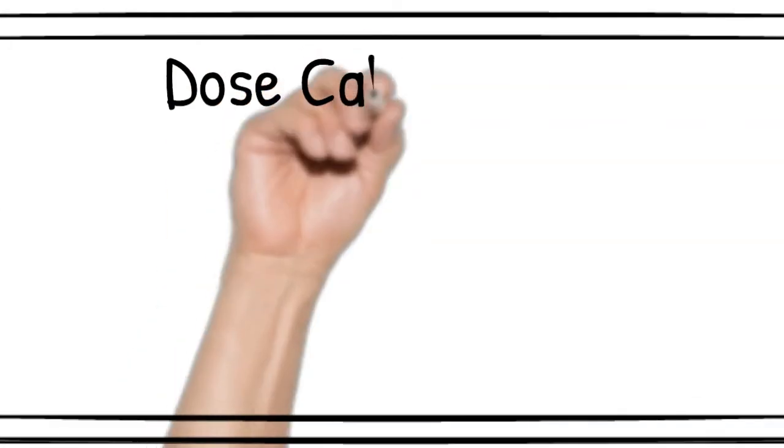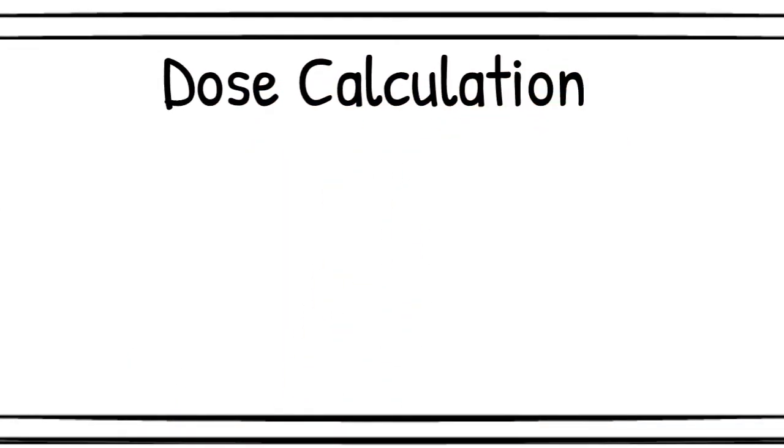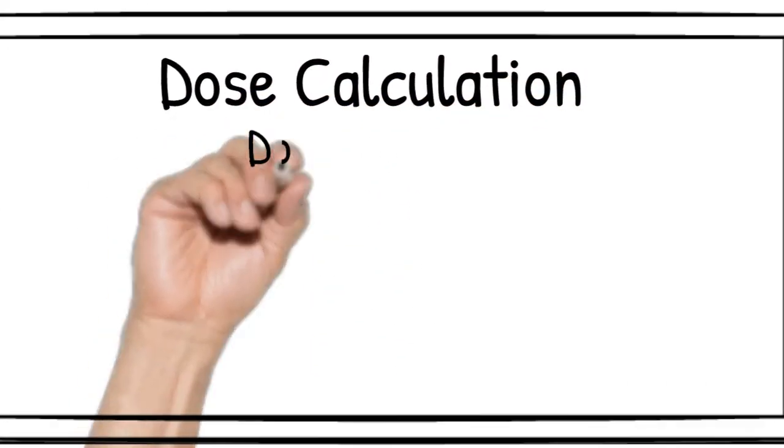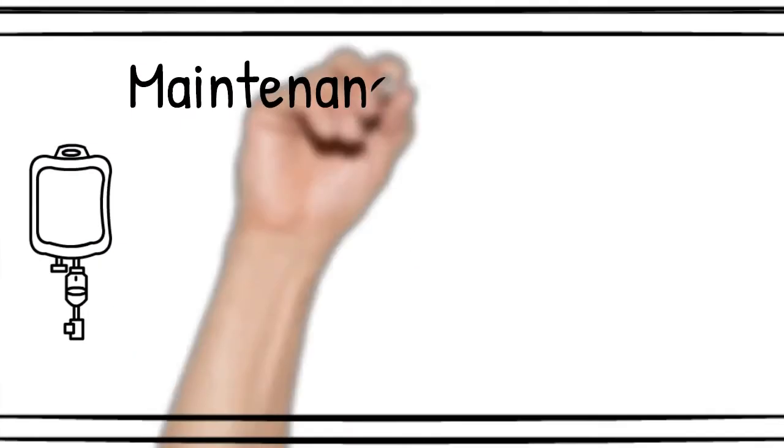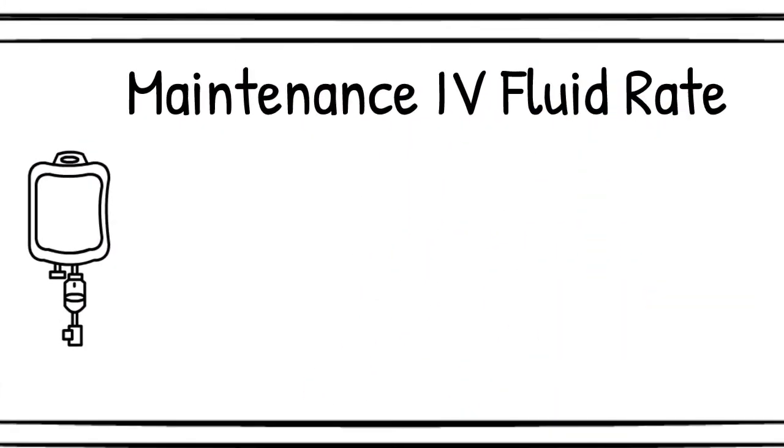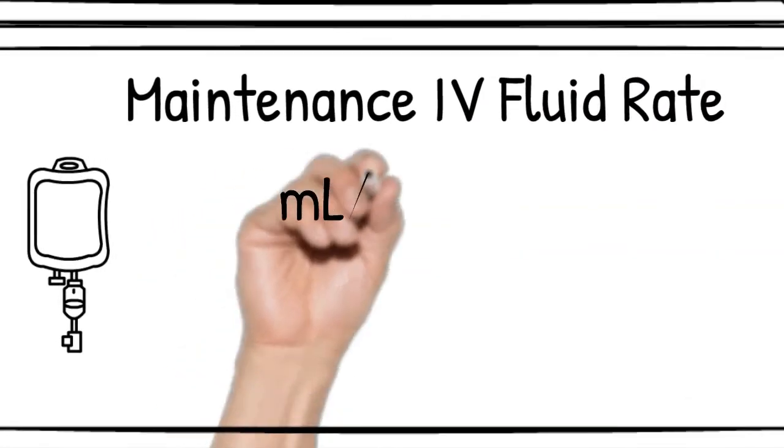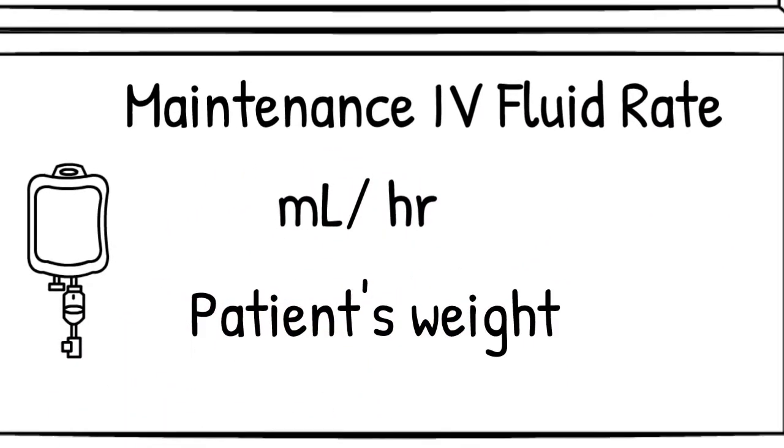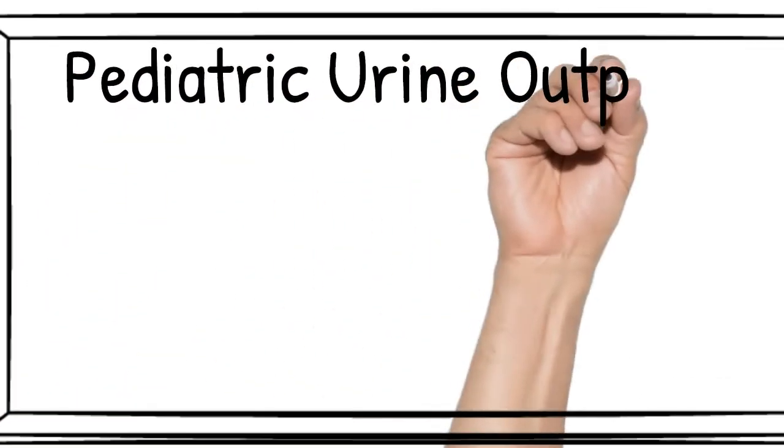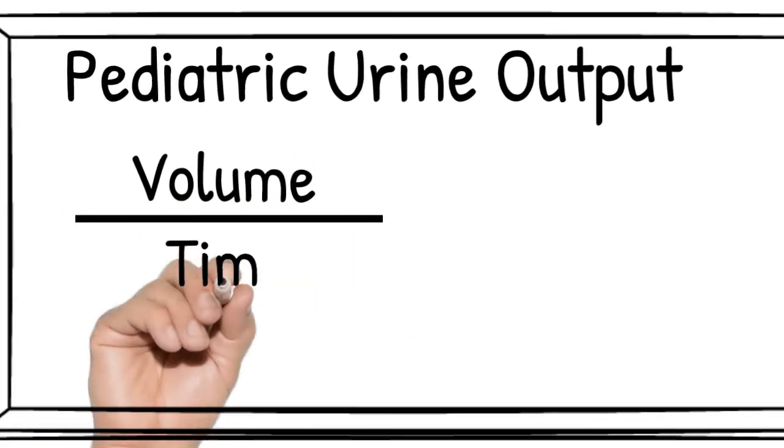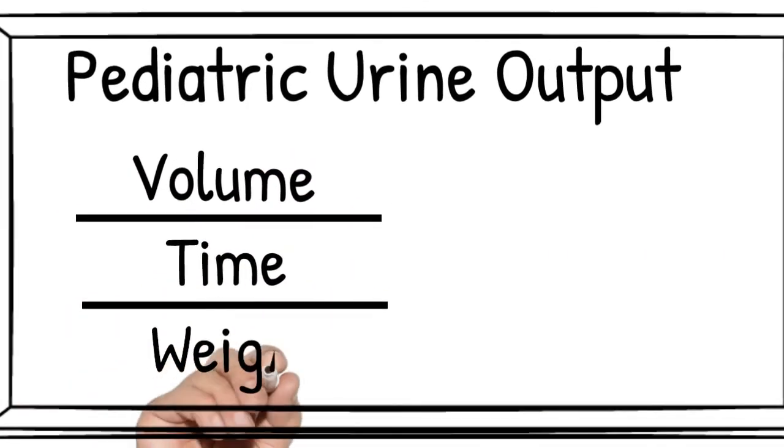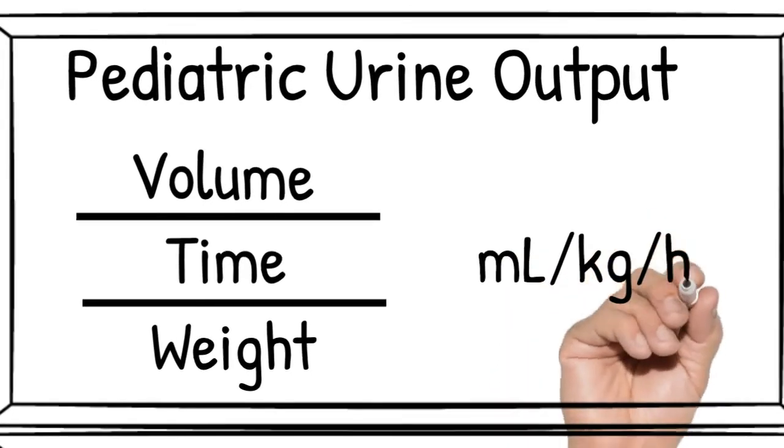So for summary, we talked about dosage calculation. Please don't forget to provide both the dose in milligrams and the volume in mls. We talked about maintenance IV fluid rate in mls per hour based on the patient's weight. We also talked about pediatric urine output. And that is the volume over time over weight expressed in mls per kilogram per hour.